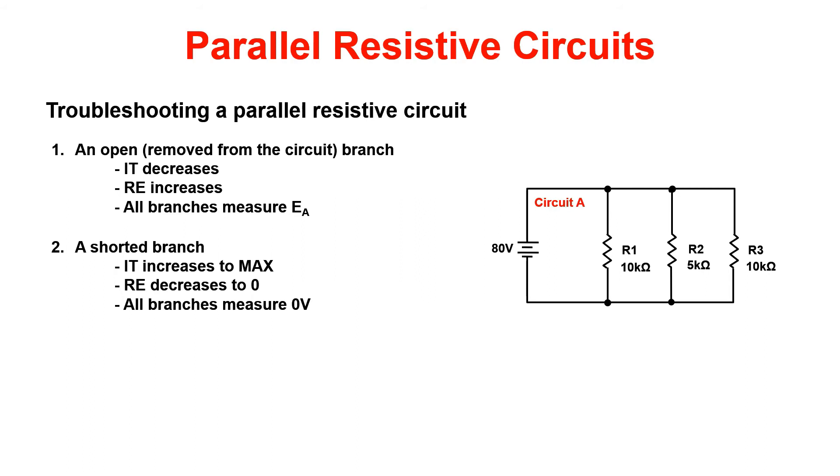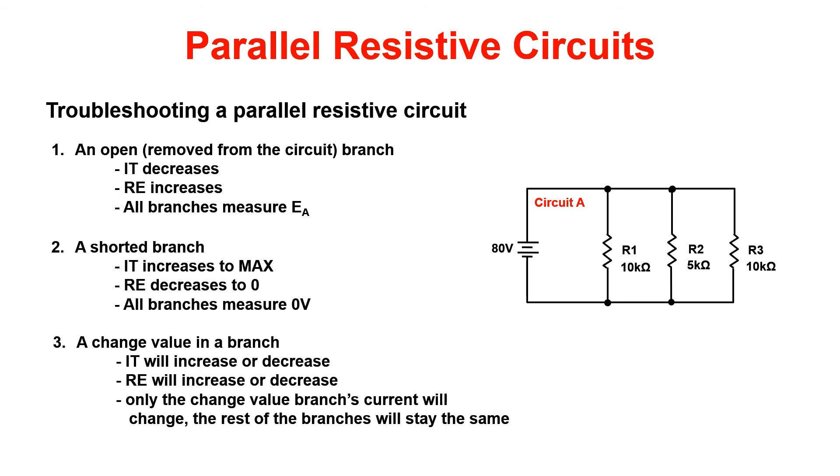Now, the last malfunction that we can have is a change value. This would be identified by an increase or decrease in IT. Likewise, RE will increase or decrease inversely of what IT does. Remember Ohm's law? Only the change values branch current will change, and the rest of the branches will stay the same.